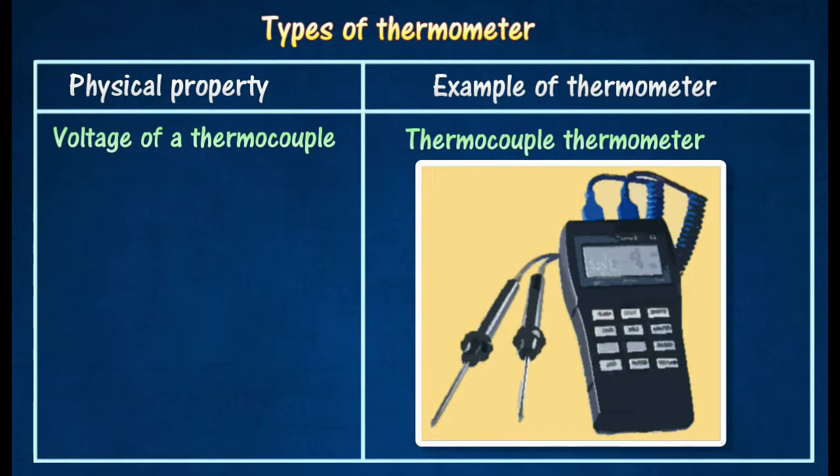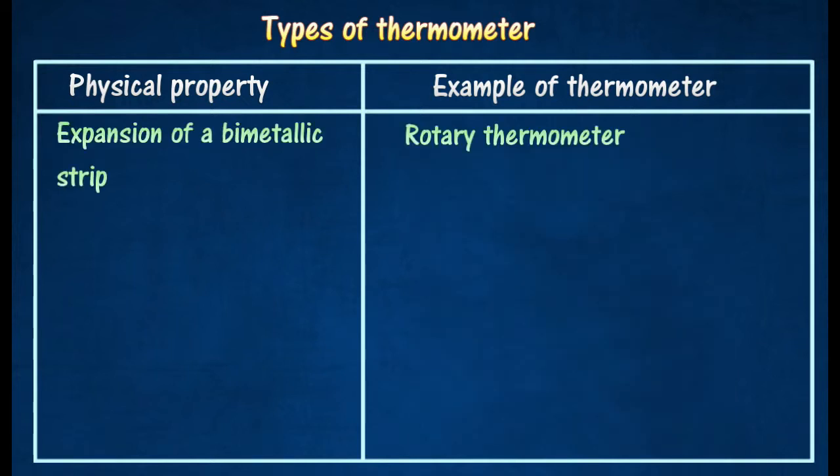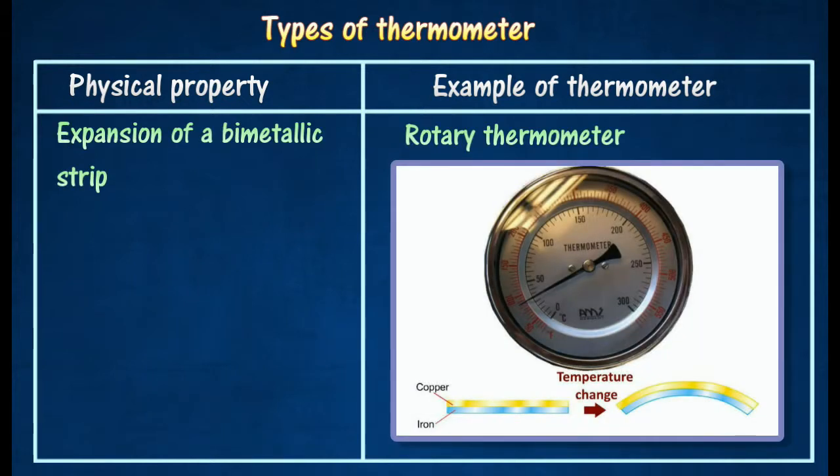If the junctions are at different temperatures, a voltage is produced causing a small current to flow along the wires. A rotary thermometer makes use of the expansion of a bimetallic strip to measure temperature.